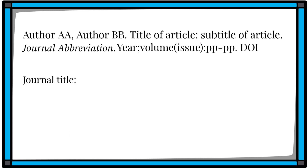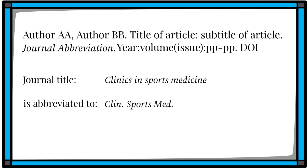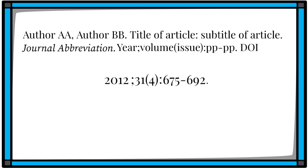Journal titles are in italics and abbreviated. Check the JCU AMA referencing guide for more information on correct abbreviations. There are no spaces between the year, volume, issue number, and page range. A semicolon after the year, the issue number in parentheses, a colon before the page range, and ending with a full stop.